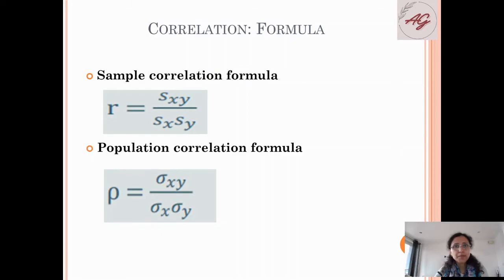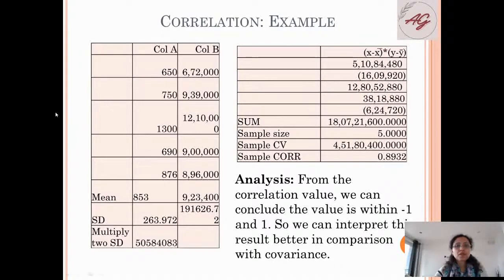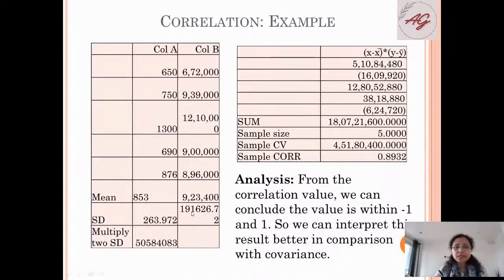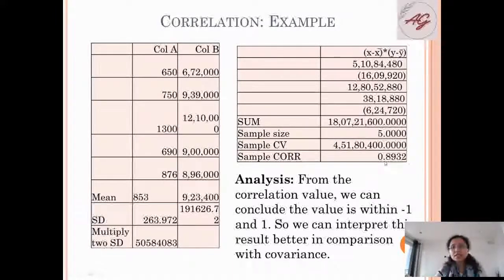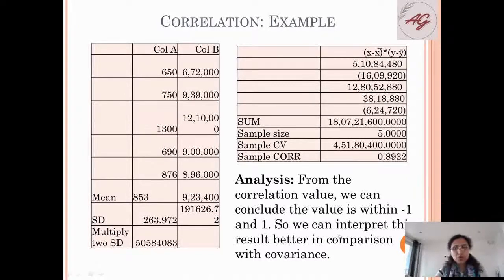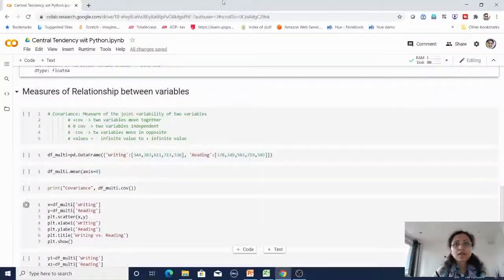Let us understand correlation with an example using the same data set. I have already calculated the mean, now I'm calculating the standard deviation for column A and column B. Then I multiply these two standard deviations. I already have the sample covariance calculated. The correlation comes out to 0.8932. From this correlation value we can conclude the value is within minus one and plus one, so we can interpret the result better in comparison with covariance.